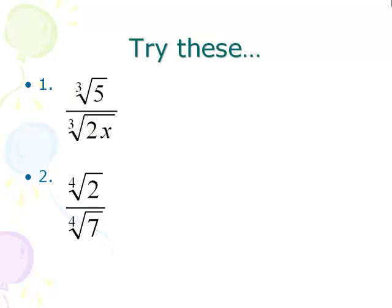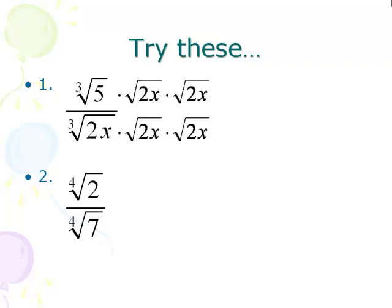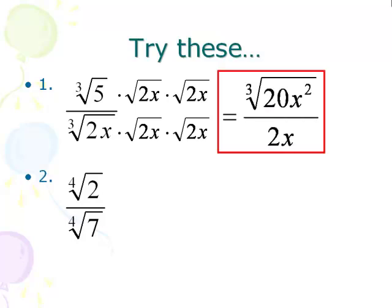Try the next one — see how many 2x's you have to multiply by. Pause the video until you're ready. Right now on the bottom we have one 2x; we need a total of three 2x's for a cube root. So multiply by two more 2x's on the bottom, and the same to the top, giving a total of the cube root of 20x squared on top. On the bottom, the complete group of 2x's means the cube root goes away completely, leaving just 2x on the bottom.